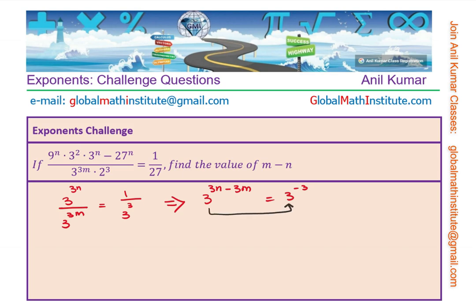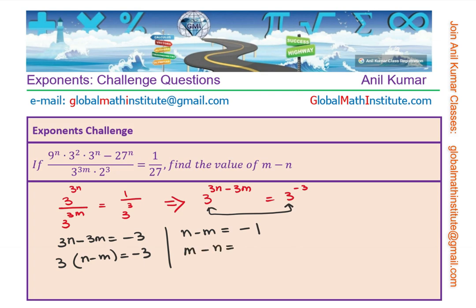The bases are equal, so the exponents must be equal. That means 3n minus 3m equals minus 3. We can simplify by taking 3 as common, giving us 3 times the quantity n minus m equals minus 3.